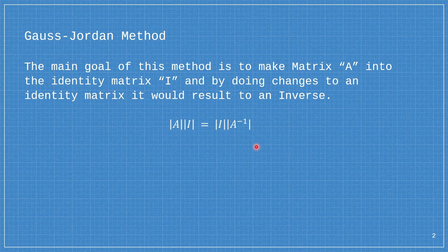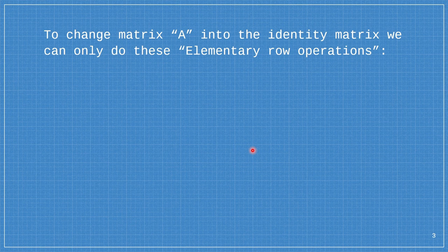For those of you who don't know what an identity matrix is, it is a matrix composed of 1s and 0s. It has 1 on the diagonal and 0 elsewhere.